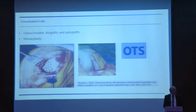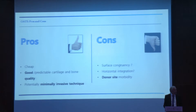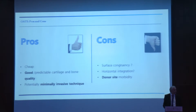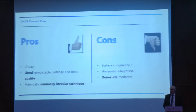We also discussed the osteochondral graft — it could be an allograft as described by Scott, or a mosaic plasty. What is in favor: it's cheap, we can obtain good and predictable cartilage, and it could be performed with a minimally invasive technique, though that is not so easy. But again, it is very difficult to have good surface congruency, and we have a perfect integration challenge in the horizontal plane, along with some donor site morbidity.